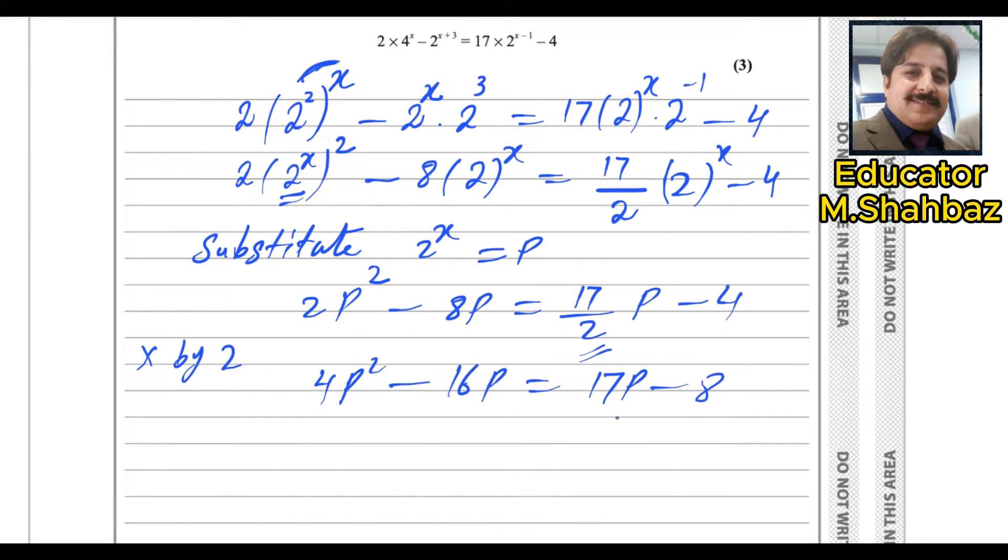Now bring these 2 values on the left side of the equation, because whenever you move the values from left side of the equation to the right or right side to the left, the signs are being changed. So it will be 4p square, because this 17p and minus 16p will make it minus 33p, because this will be minus here. And this minus 8 becomes positive, so this is positive 8 equals to 0. If you notice that, it is the required result, we need it. 4p square minus 33p plus 8. So this is the final answer for this part.